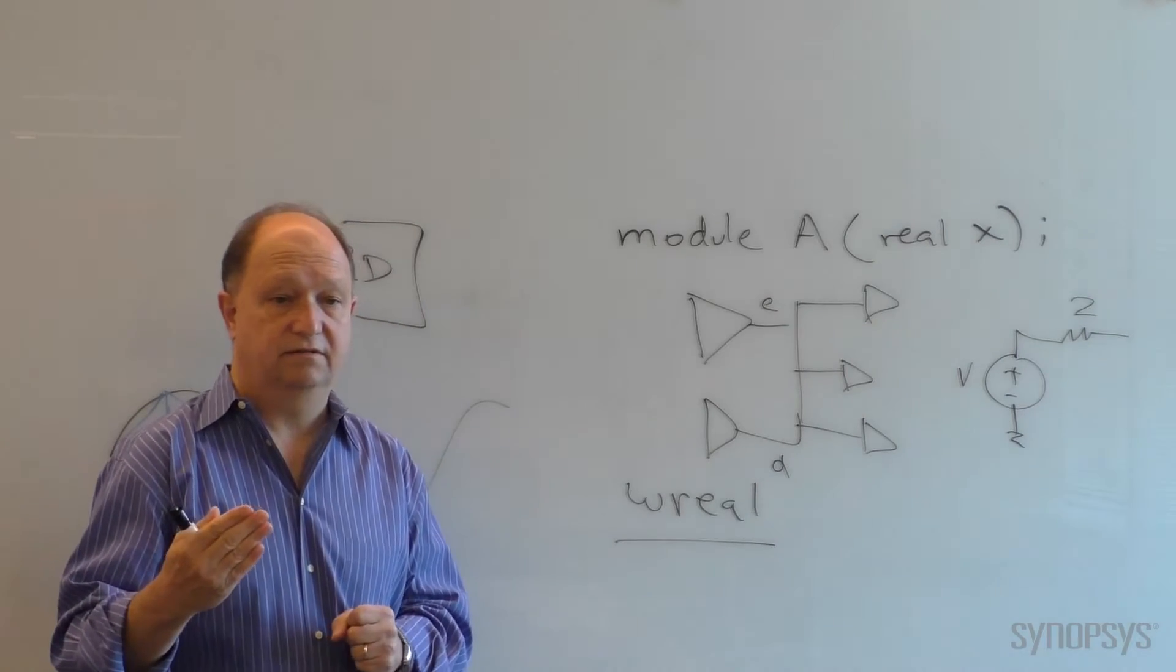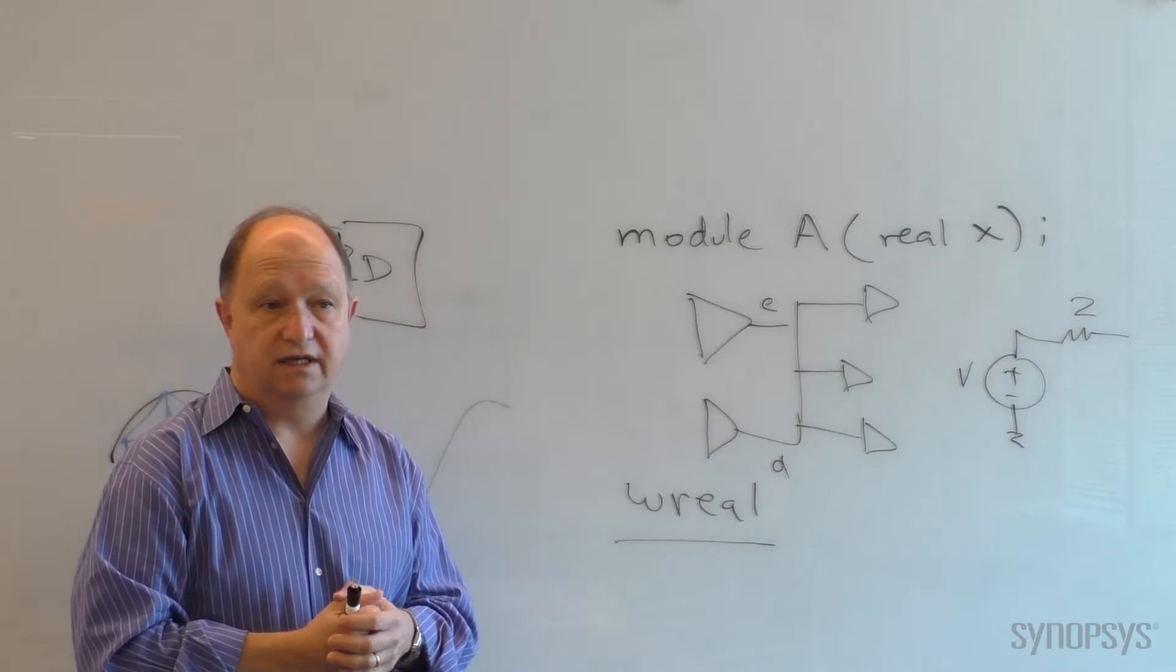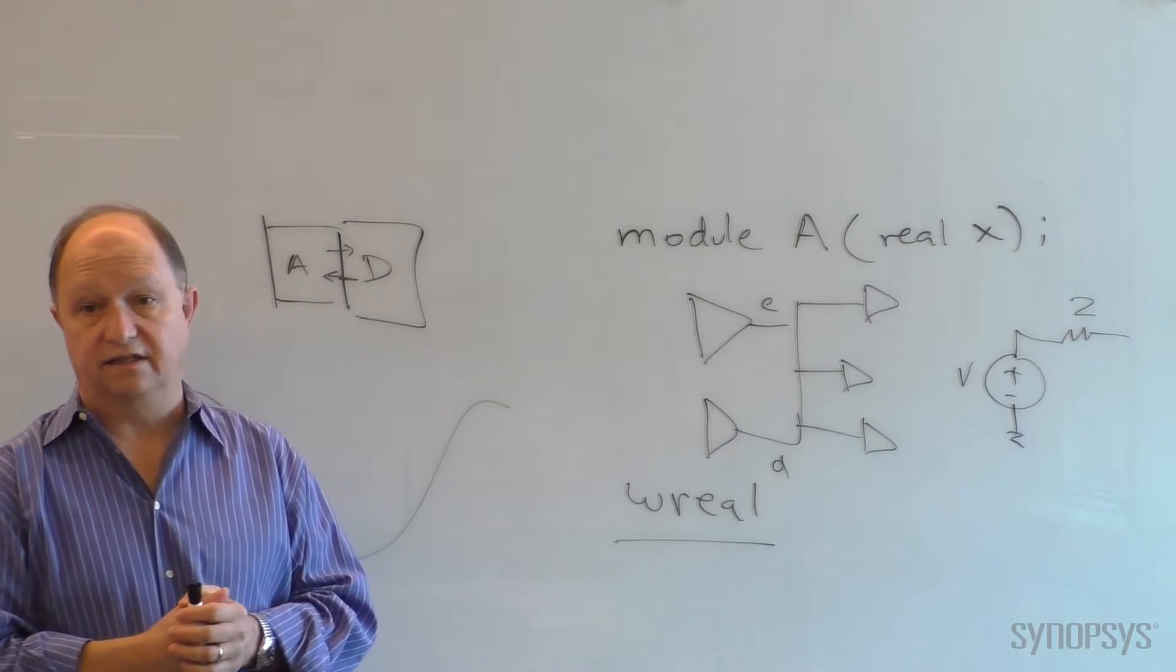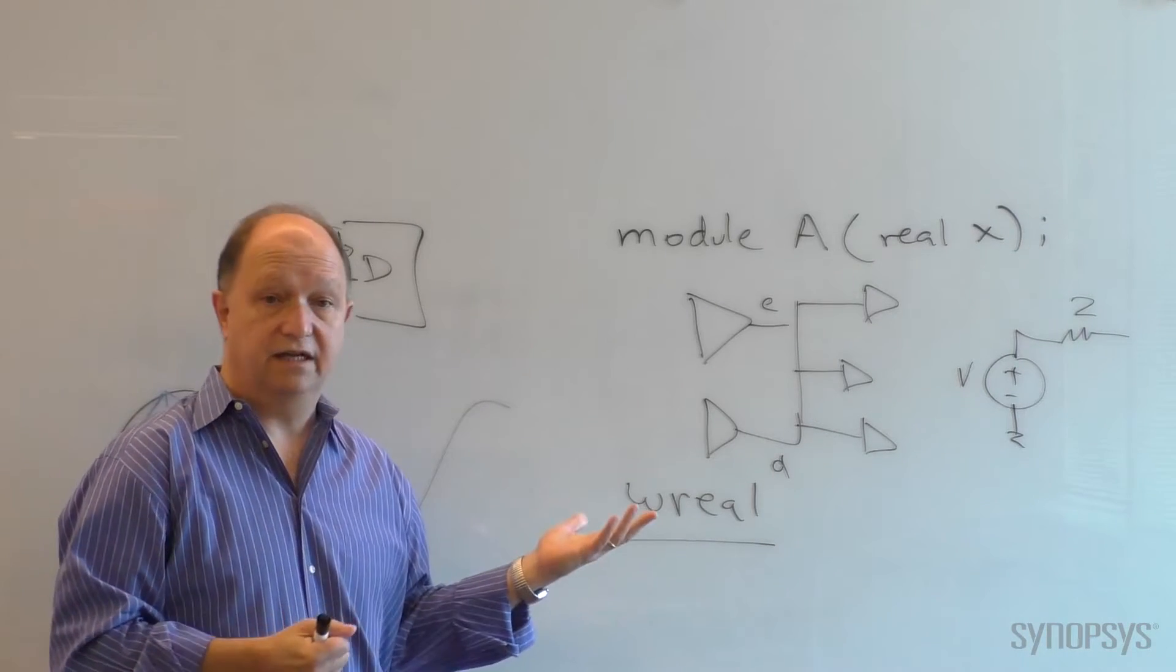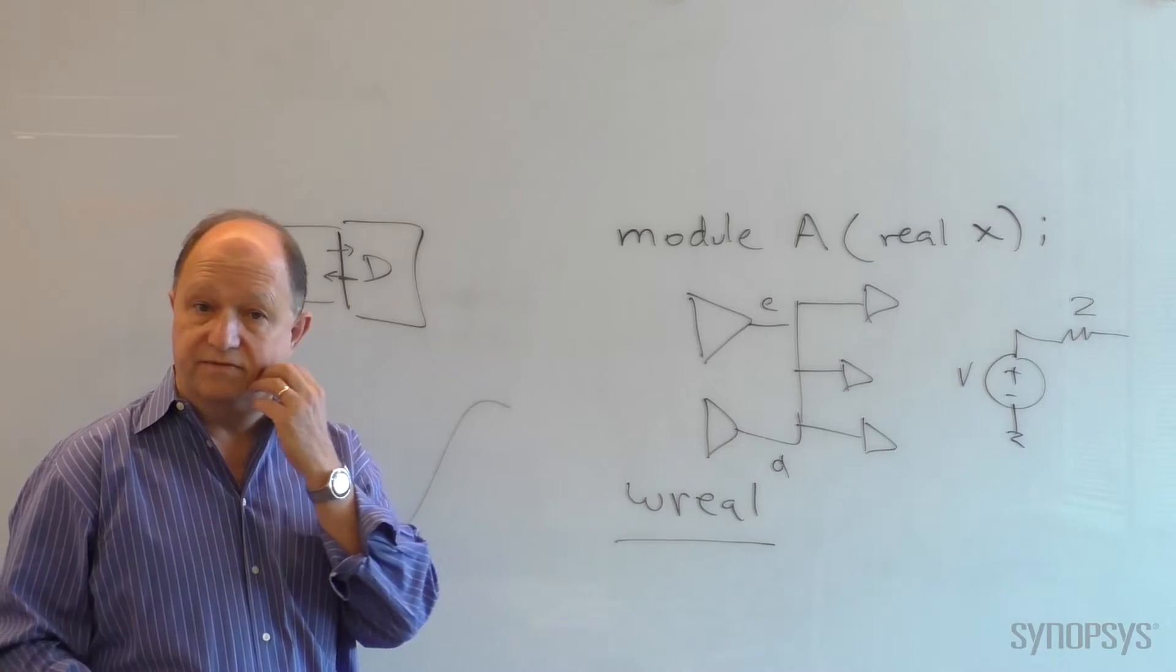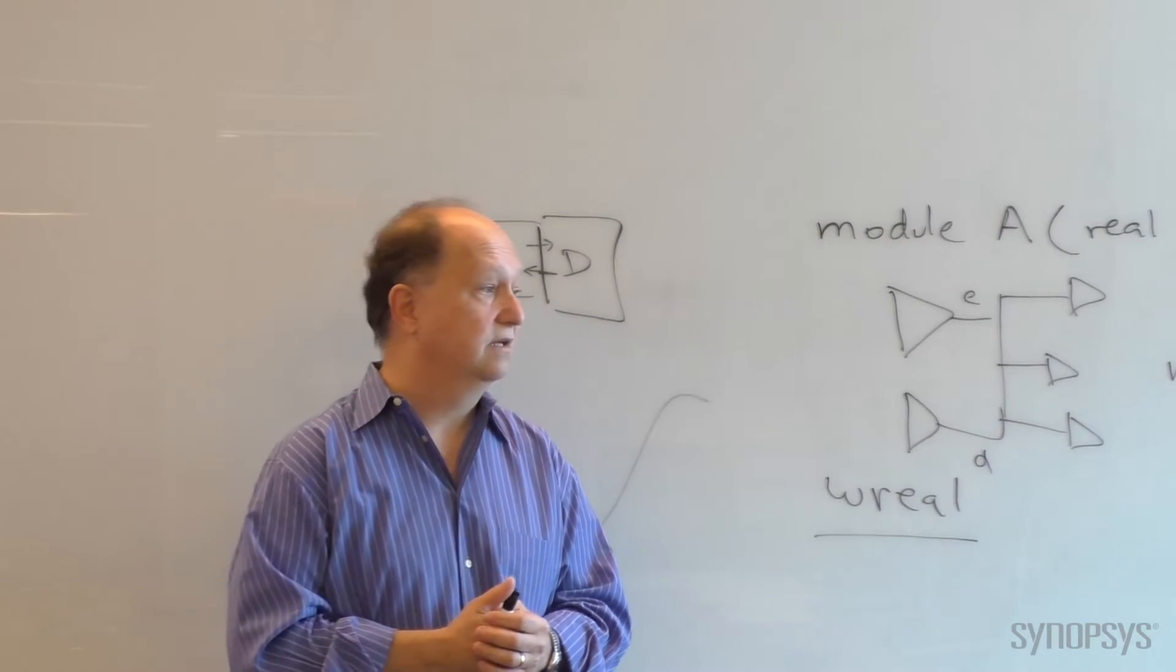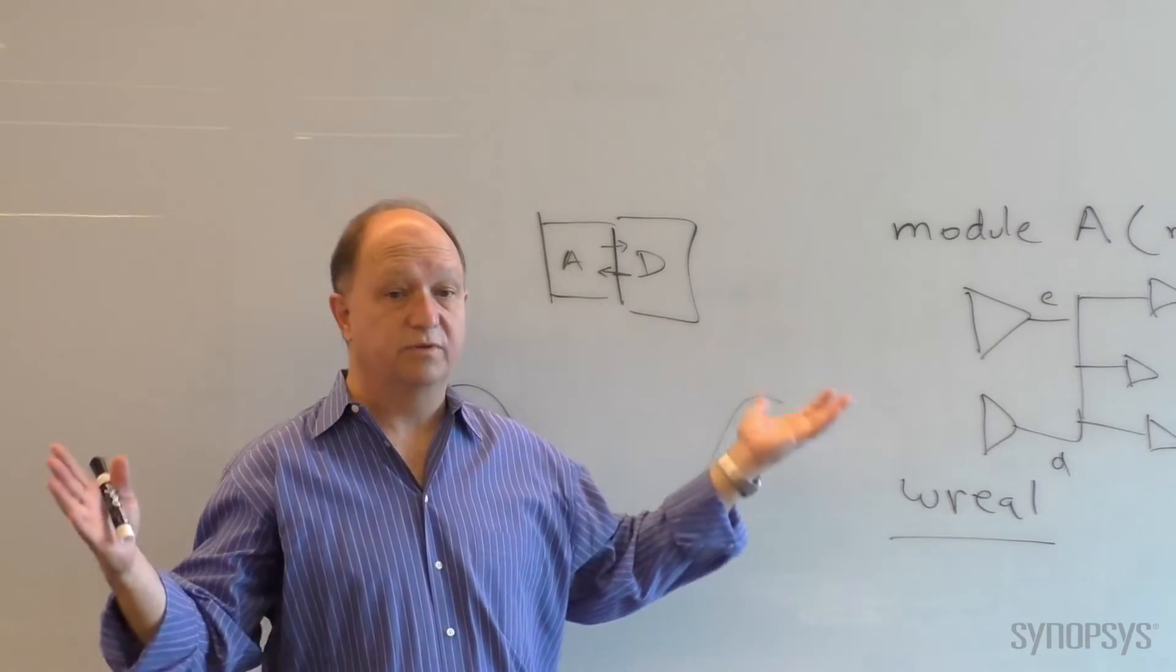And the final problem is what has been happening in the last decade or so, is that low power has become more and more important and more prevalent. In fact, I think almost every design today pays a lot of attention to power. And the way we handle this is by creating different power domains to do voltage scaling. It is not uncommon for today's systems to have hundreds of power domains and maybe millions of power states. So the scope of this has grown.